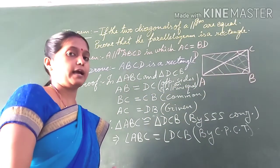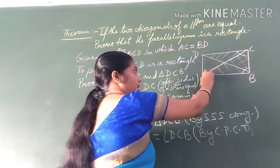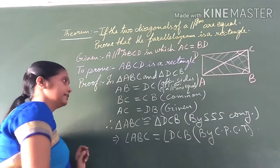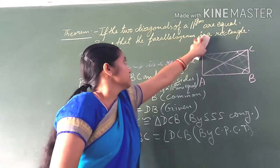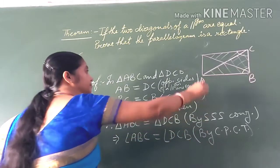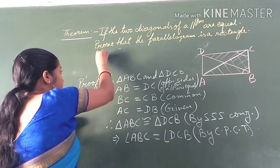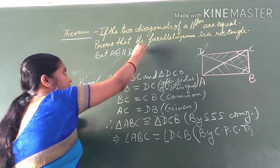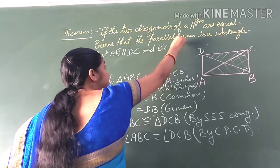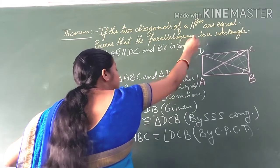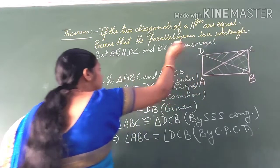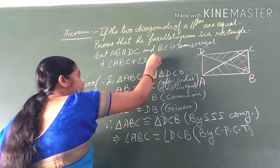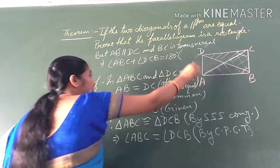But look at the figure: angle ABC and angle BCD are co-interior angles, because AB is parallel to DC and BC is a transversal. So we can write: AB is parallel to DC, and BC is a transversal. This implies angle ABC plus angle BCD is equal to 180 degrees, as they are co-interior angles.